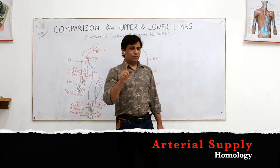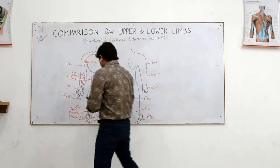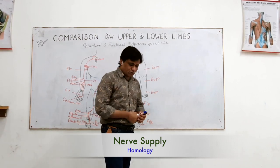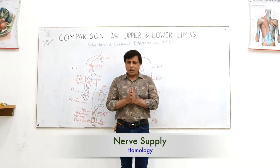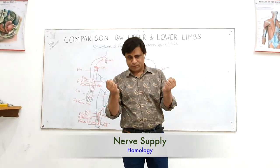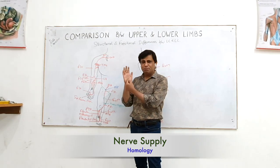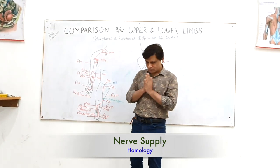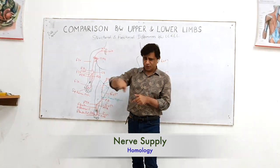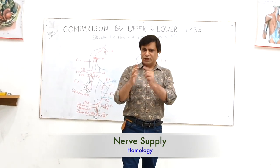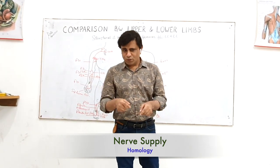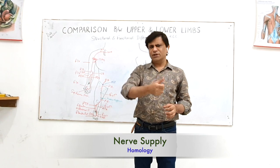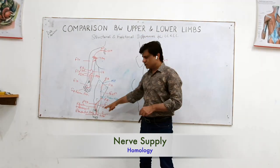The same applies for nerves. In the palm, the deep palmar arch is a continuation of the radial artery. In the sole, there is the plantar arterial arch. Let's compare the palm and sole: in the palm you have 20 intrinsic muscles; in the sole you have 18 intrinsic muscles.